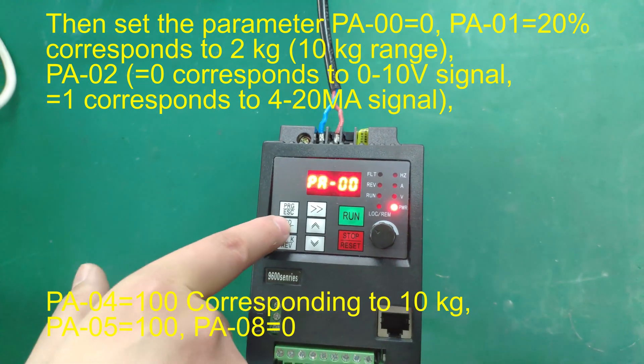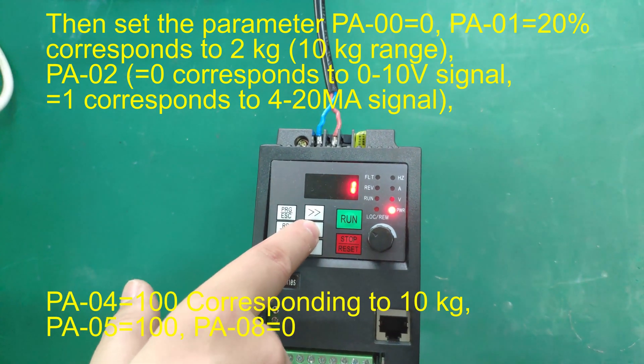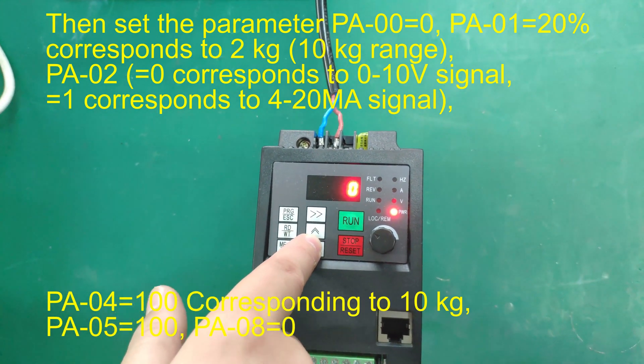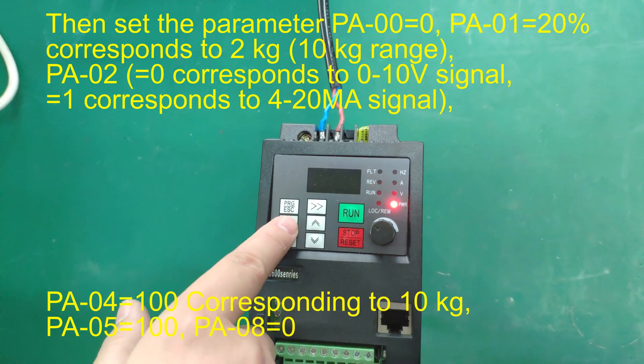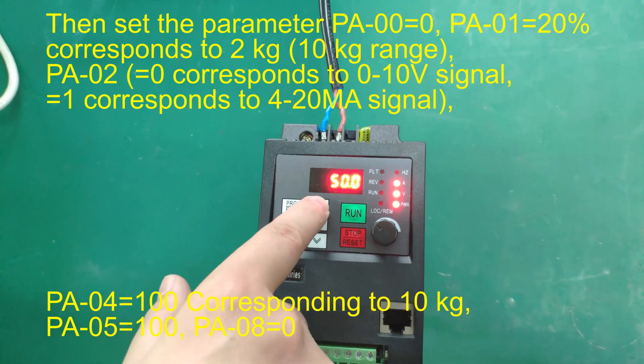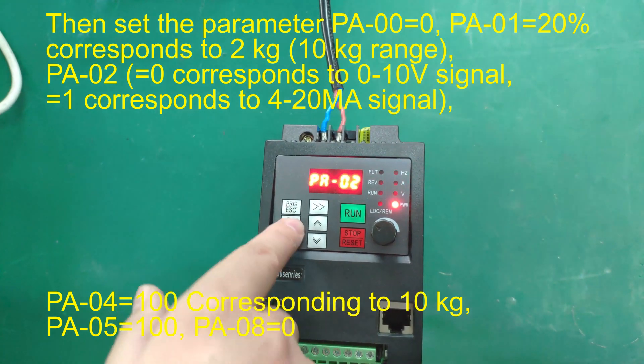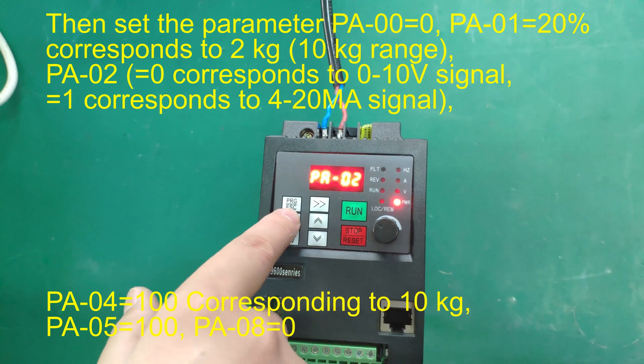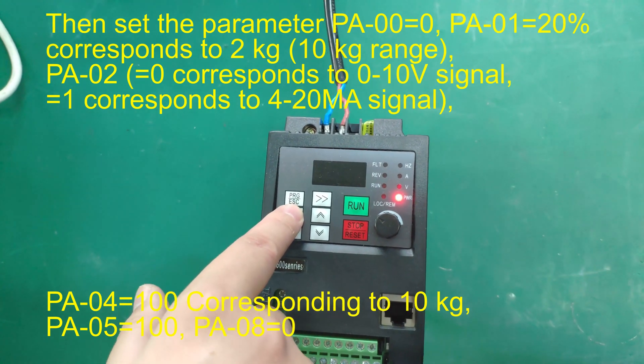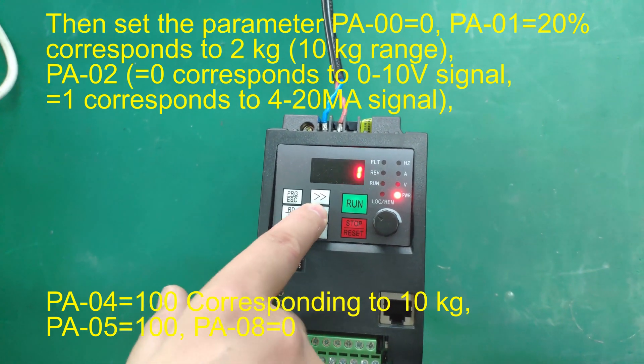Then set the parameter PA0=0, PA01=20% corresponds to 2kg (10kg range), PA02=0 corresponds to 0-10V signal, =1 corresponds to 4-20MA signal.